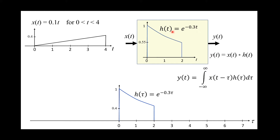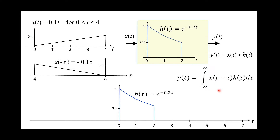Our x-axis now depends on tau, and this is our variable. The next thing is we change x(t) to x(τ). We replace t by tau, but then we have x(-τ). That means we rotate the input horizontally around the vertical axis, and we get x(-τ).